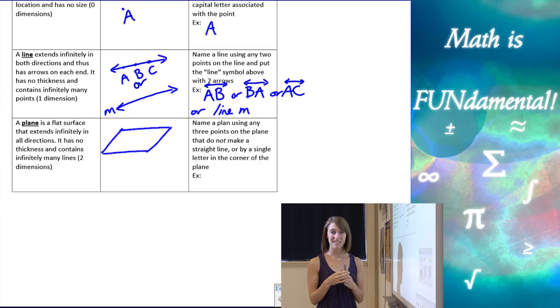It still has no thickness, just like the line. It has no thickness. You want to think of it infinitely thin kind of thing, and it contains infinitely many lines. This is going to be two dimensions this time, kind of like a piece of paper. You can think of that as two dimensions.